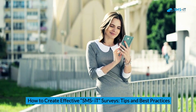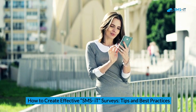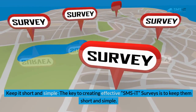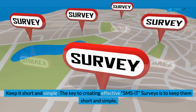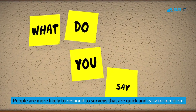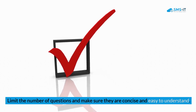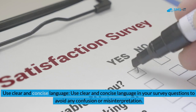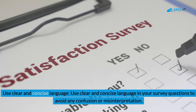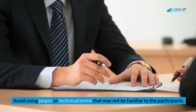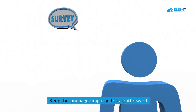How to create effective SMS surveys — tips and best practices. First, keep it short and simple. The key to creating effective SMS surveys is to keep them short and simple, as people are more likely to respond to surveys that are quick and easy to complete. Limit the number of questions and ensure they are concise. Second, use clear and concise language to avoid confusion, and avoid jargon or technical terms that may not be familiar to participants.